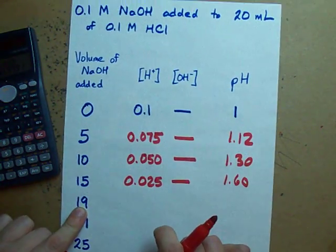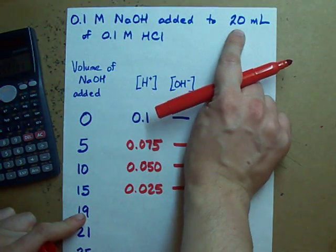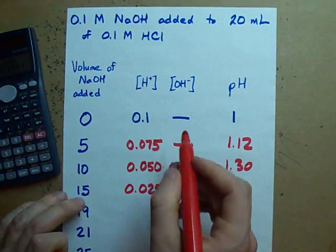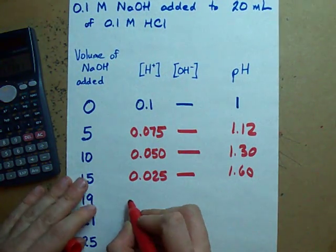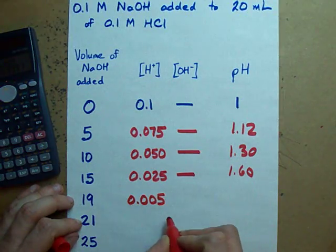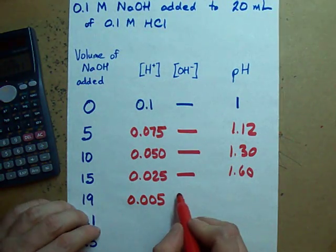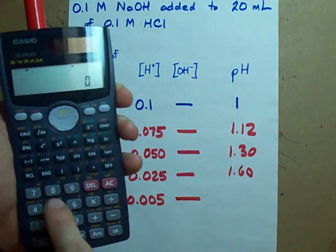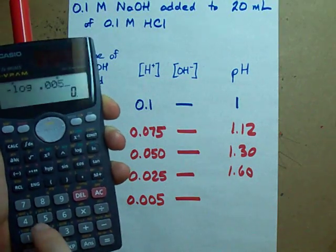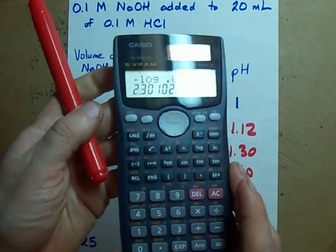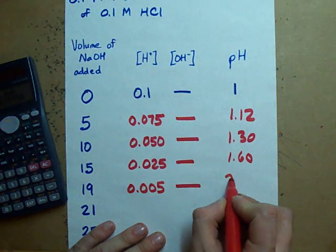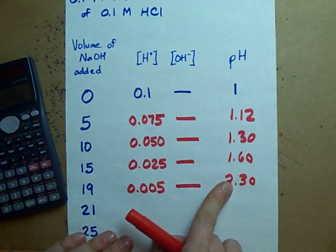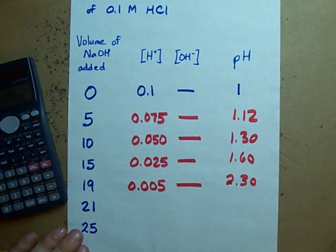Once we've added 19 milliliters, I've titrated away 95% of my base. I only have 5% of my acid remaining. 0.005. Still pretty high. And I don't really have any OH left. But my pH has gone up to negative log 0.005, which is up to 2.3 now. Oh boy. It increased by 0.7 pH units and I only added 4 milliliters.